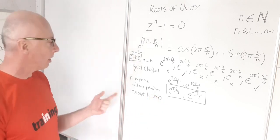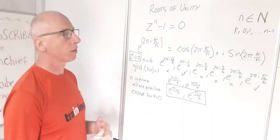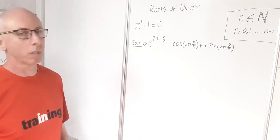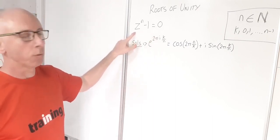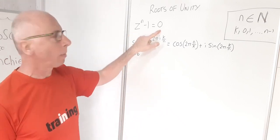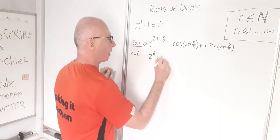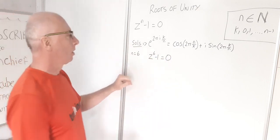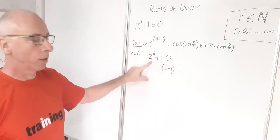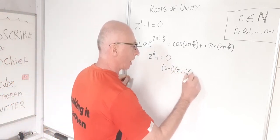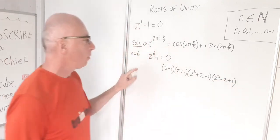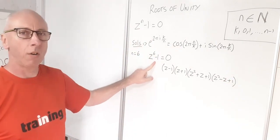Now let's look at the relationship between roots of unity and cyclotomic polynomials, again for n equals 6. We want the cyclotomic polynomial for z^6 minus 1 equals 0. Factoring this out, we get (z − 1)(z + 1)(z² + z + 1)(z² − z + 1), since both +1 and −1 are solutions.